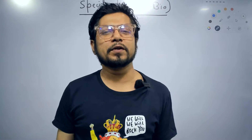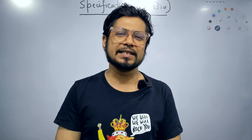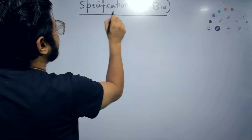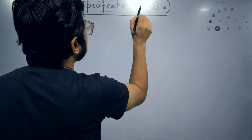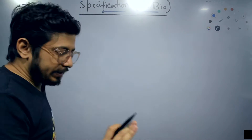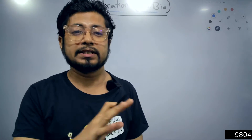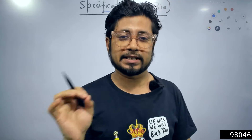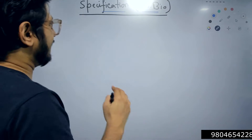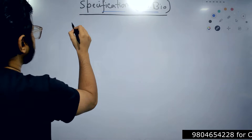Hello everyone, welcome back to another video from Shomu's Biology, another trick series video. Today we are going to talk about specification from developmental biology. This is very important for CSIR NET Life Science, developmental biology — that is CSIR NET Life Science Unit 5. What do you mean by specification?